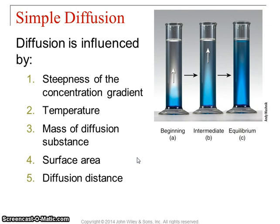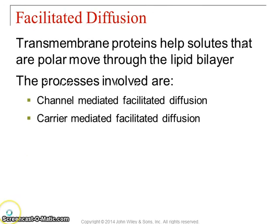The last factor affecting diffusion rate is diffusion distance — the less distance molecules have to travel, the faster they do it. Next, we've got facilitated diffusion. Molecules are moving just like in normal simple diffusion, except these are the molecules that need help crossing the membrane — polar molecules, things with charge. We use channel membrane proteins and carrier membrane proteins for facilitated diffusion.